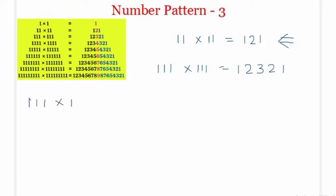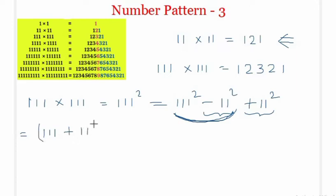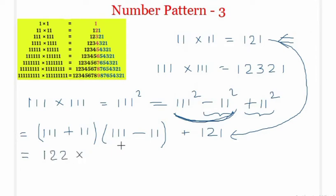Now, 111 into 111 equals 111 square, and that is same as 111 square minus 11 square plus 11 square. That means we can subtract this number and we can add this number. Now, if we apply the formula of a square minus b square to this first two terms, it will be a plus b into a minus b. So, 111 plus 11 into 111 minus 11, and these two terms are in the product form. Plus 11 square is 121. We are taking help from the previous step.